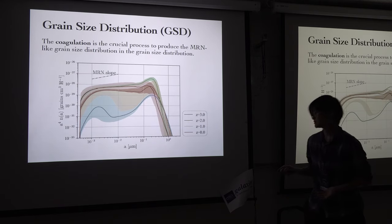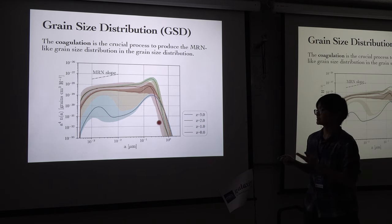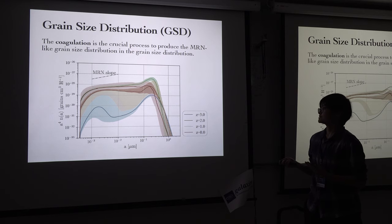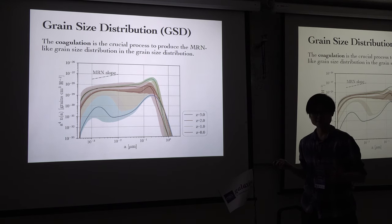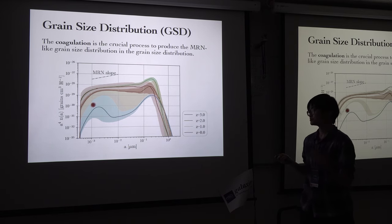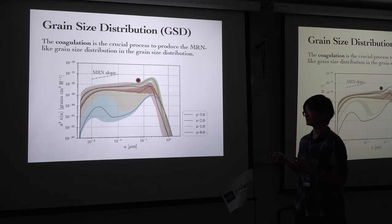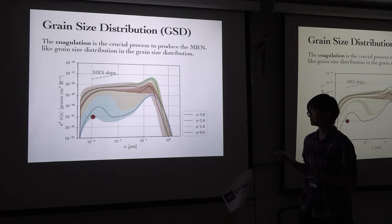Now I'll go into more detail about our results. On this plot, I show the grain size distribution of our galaxies at different redshifts from redshift 3 to redshift 0. At first, the size distribution is dominated by large grains — this bump is caused by stellar dust production. Later, other dust formation mechanisms like shattering and coagulation get involved, modifying the shape by moving some small grains into large grains and vice versa, so the abundance of small grains increases gradually.